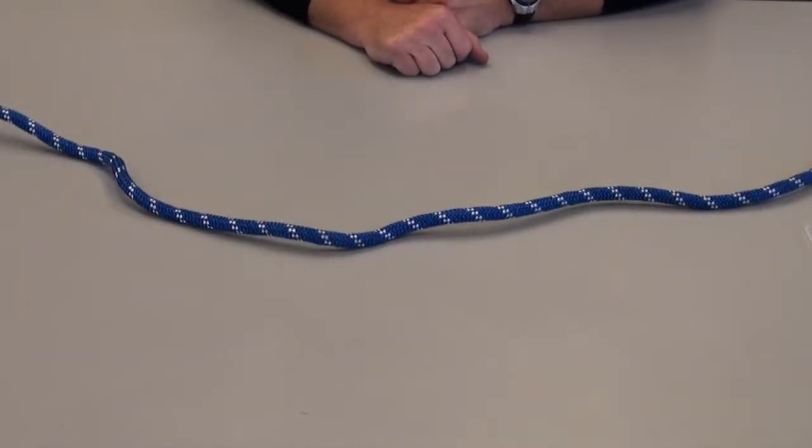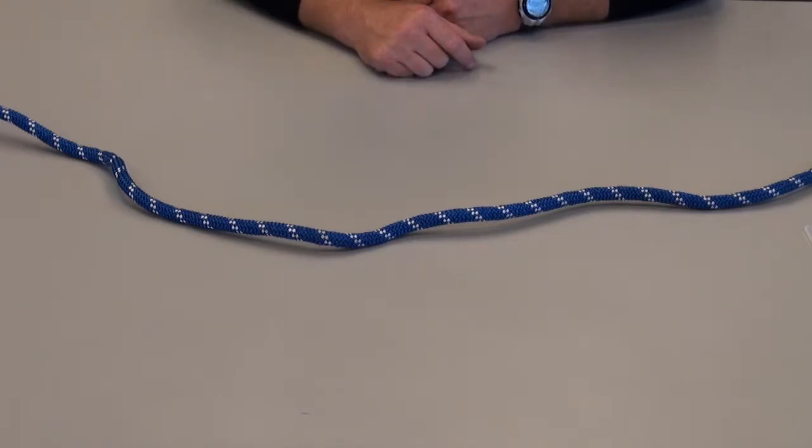All right, we're going to talk about the clove hitch. The clove hitch is a hitch designed to cinch around an anchor or an object that we apply it to.